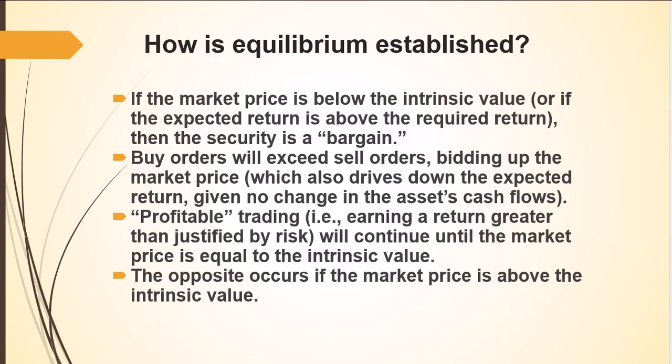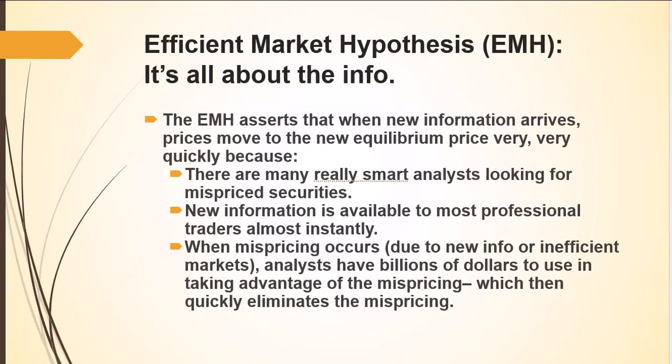We get price to move by getting information, and that's really what the efficient market hypothesis is all about. It asserts that when new information arrives, prices move to the new equilibrium very quickly. Why? There are lots of people looking for mispriced securities, and new information is available to almost everybody — certainly to all professional traders. When mispricing occurs, analysts have billions of dollars to take advantage of it, so prices change very quickly.